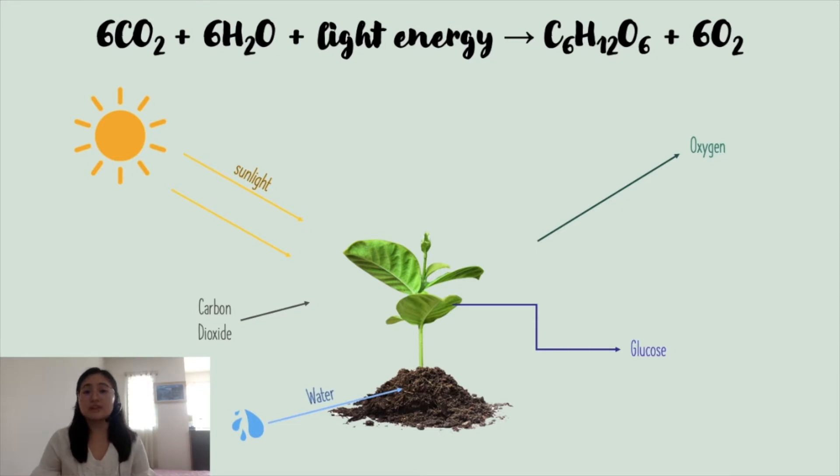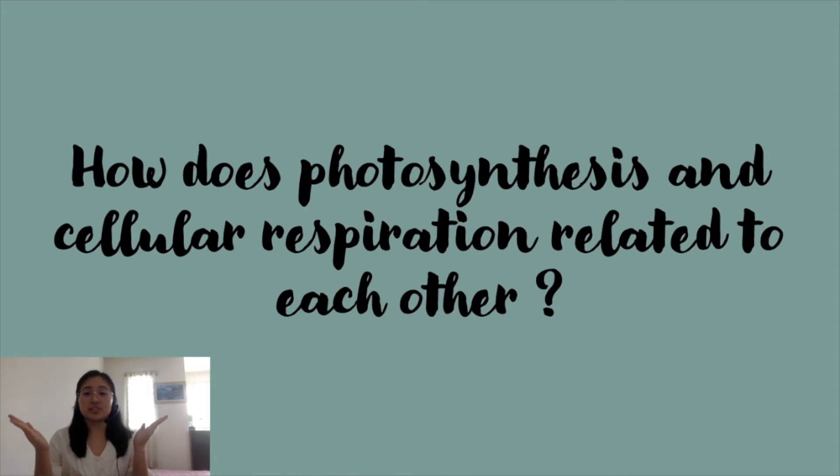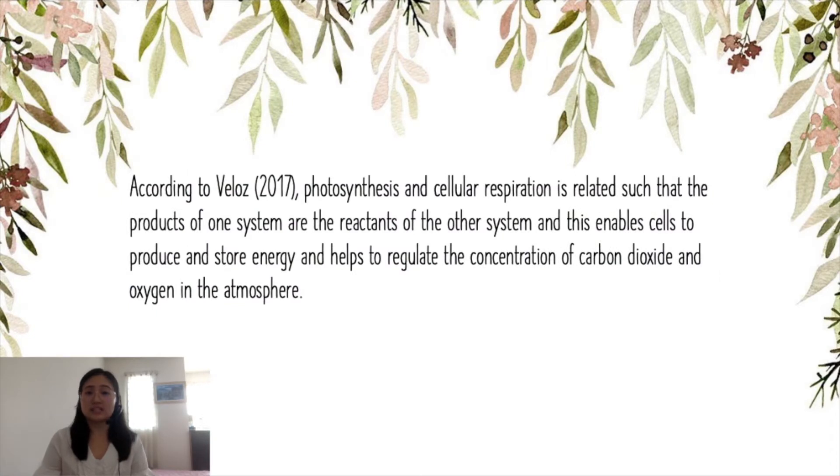It is true that photosynthesis is vital for all organisms to survive. With this, we are led to the next question. How does photosynthesis and cellular respiration related to each other? According to Liz Veloz in year 2017, photosynthesis and cellular respiration is related such that the products of one system are the reactants of the other system. And this enables cells to produce and store energy and helps to regulate the concentration of carbon dioxide and oxygen in the atmosphere.